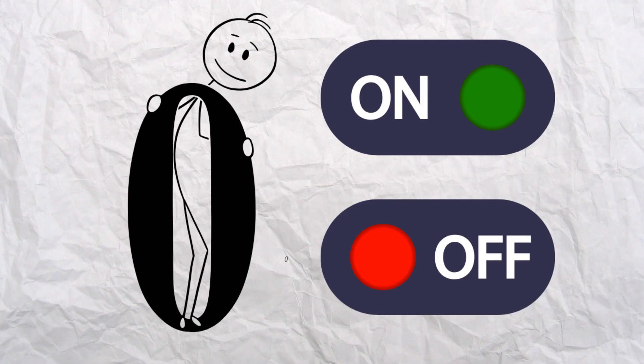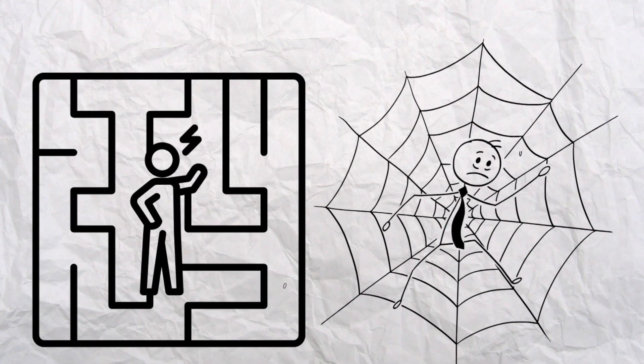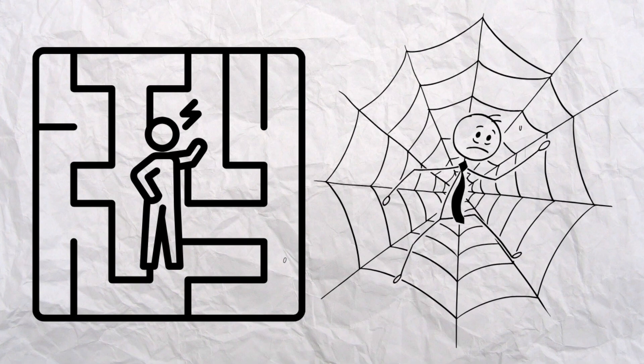Even something as simple as an elevator wouldn't know what to do between floor minus one and one. Zero gives meaning to neutral, off, and start. Without it, everything stays stuck. Like a machine that never truly resets.